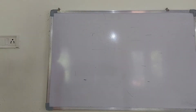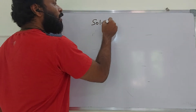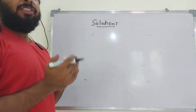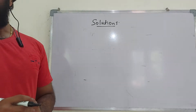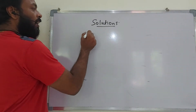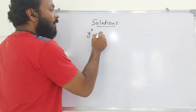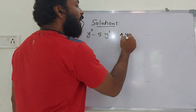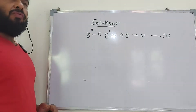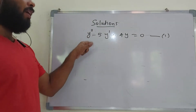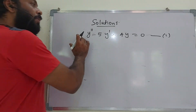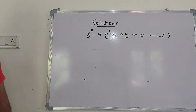In this class we will discuss the solutions of a differential equation. A solution is any relation between the dependent variable and the independent variable which satisfies the given differential equation. For example, suppose we are given the equation y'' - 5y' + 4y = 0. Here the dependent variable is y and the independent variable is x, since y'' means d²y/dx².